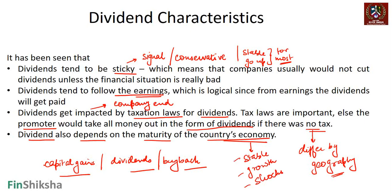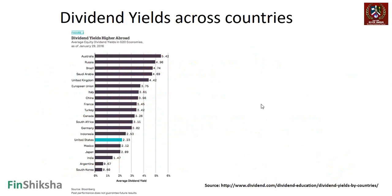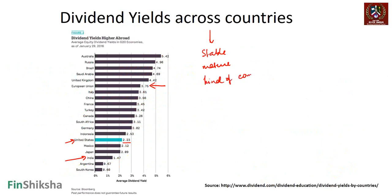Looking at dividend yields across countries: the US, the world's biggest economy, is at around 2.23%. Many European economies have better dividend yields, with Australia being among the highest. India is at approximately 1.47% dividend yield. The dividend yield of a country depends on how stable and mature its economy is, and what kind of companies form the bulk of the listed market.